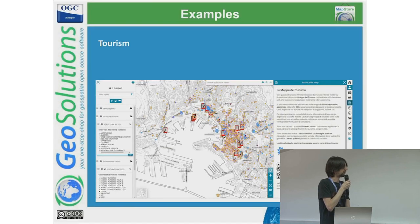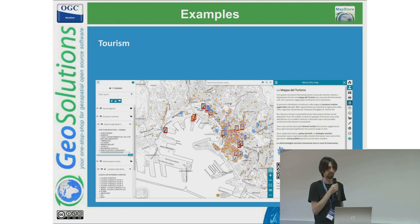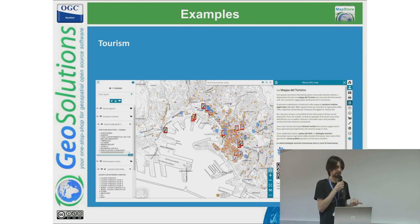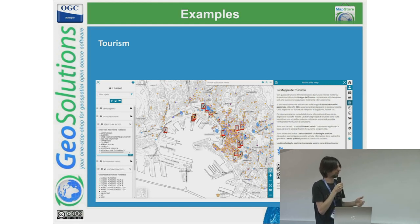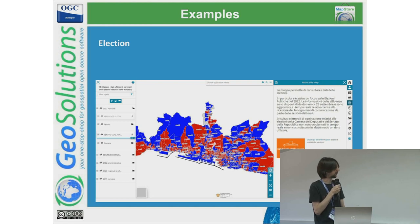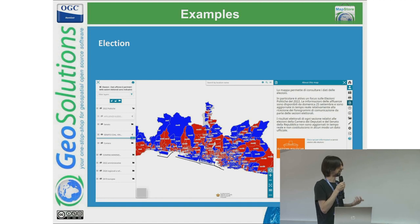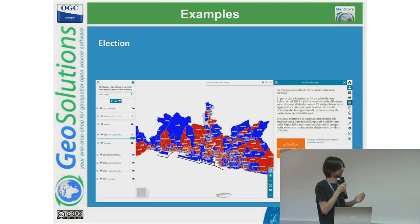Some examples of usage: the tourism map, where they take data from city services and highlighted spots that citizens can use to navigate around. For example, markers in red represent information points that one could reach if needed. They also used MapStore for the 2022 municipal elections, keeping data updated and showing a map of the evolution of votes as final results.